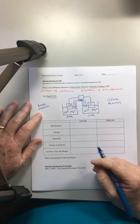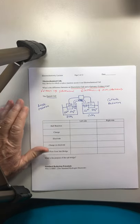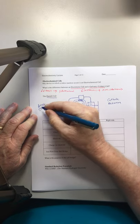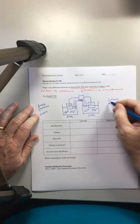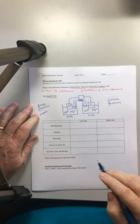And the cathode is where reduction is going to occur. It's a stupid memory trick: anode oxidation, A, O, those are both vowels. C and R are both consonants.